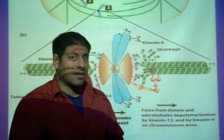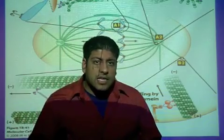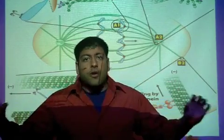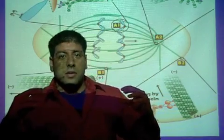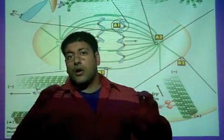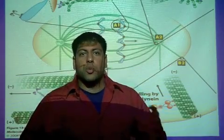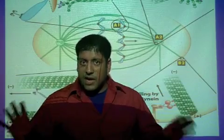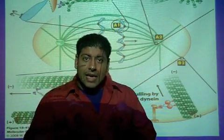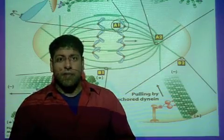The next topic is anaphase B. Anaphase B helps push and pull the two centrioles, or poles, further apart, thus stretching the cell. We want the cell to stretch so we have enough room for our two new daughter nuclei to be established, develop our contractile ring in the middle, and eventually pinch one cell into two. We need to cause anaphase B to happen, and it's the interpolar microtubules and the astral microtubules that contribute to anaphase B.